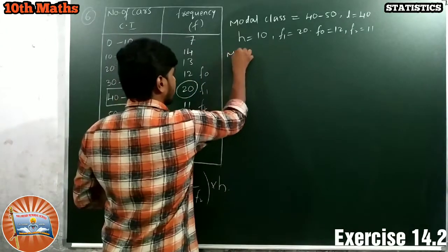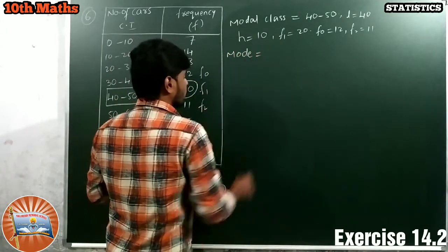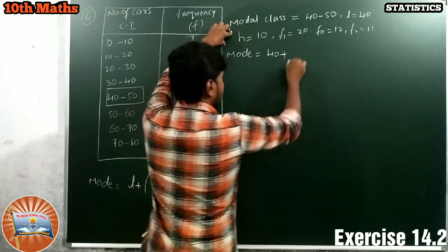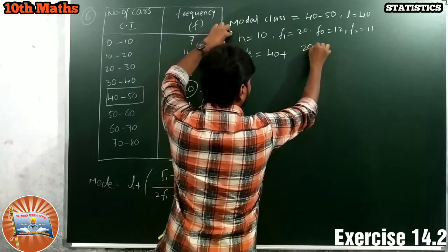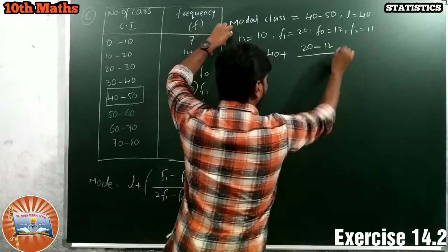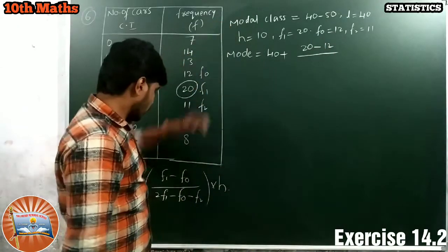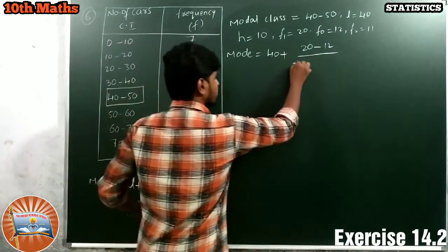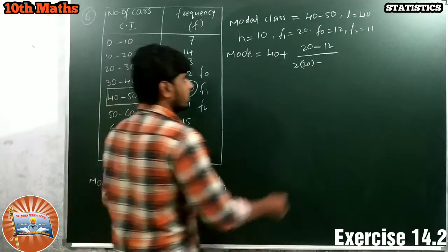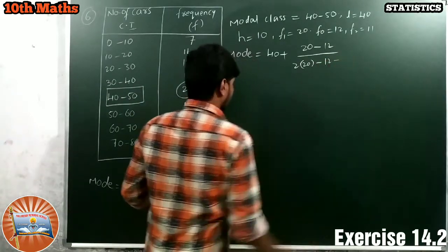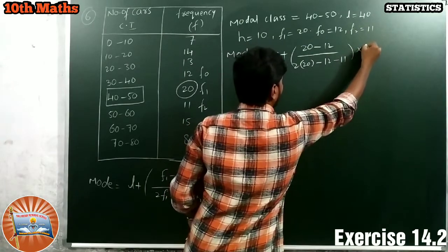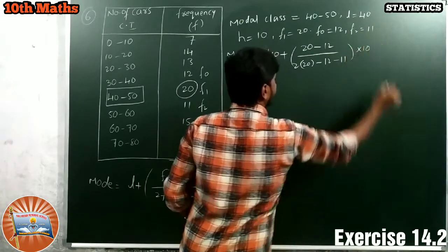Substitute the values in the formula. Mode equals L plus, 40 plus F1, 20 minus F0, 20 minus F2, it is 11, into H, it is 10.